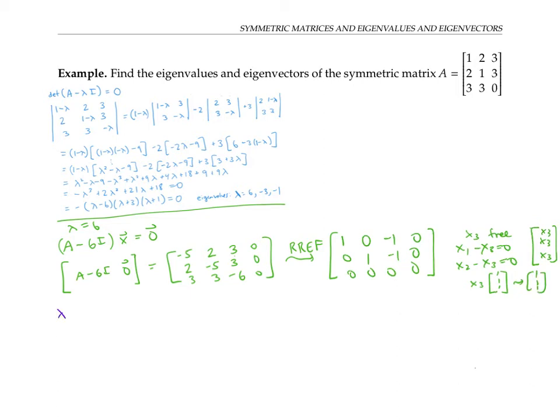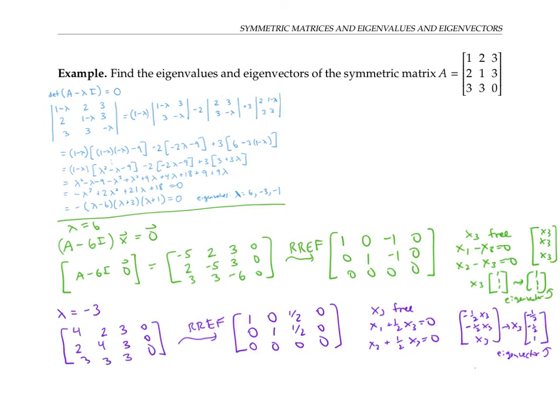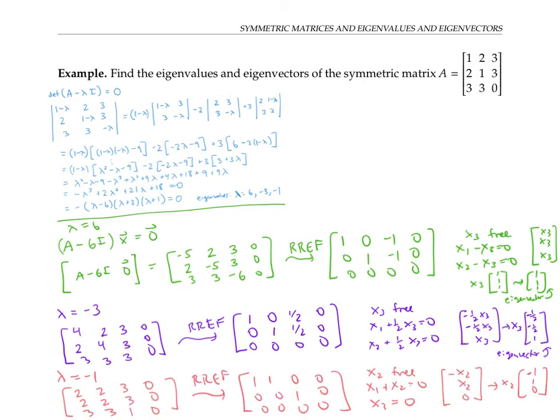A similar computation for lambda equals negative three goes like this, and a computation for lambda equals negative one goes like this. Let me copy my eigenvalues and eigenvectors here and make some observations.